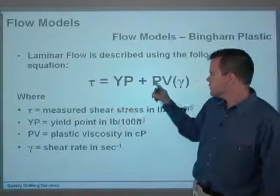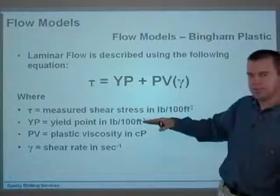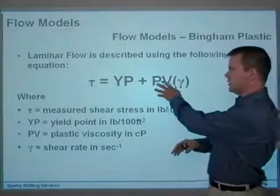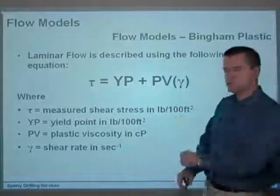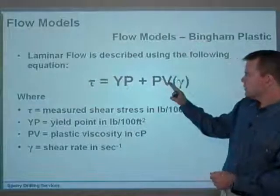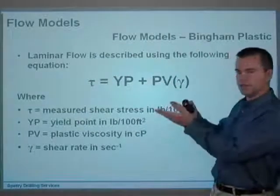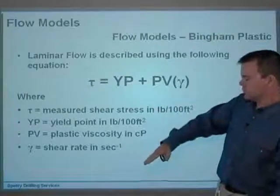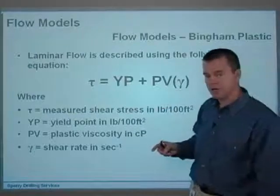You can see PV multiplied by gamma, that's determining the slope of the line in the same way as that would be. YP plus PV is your function that you're applying to your shear rate to get your shear stress. PV determines the slope of the line, YP is something that you add to that line, which basically raises the line up on the graph. I'll show you this graphically in a second.